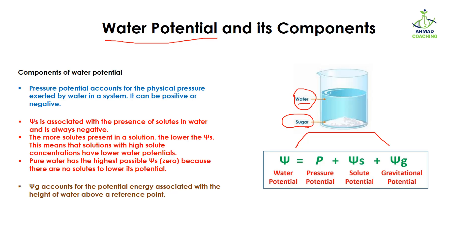First is water, which is associated with pressure potential, denoted by Ψp. Pressure potential accounts for the physical pressure exerted by the water in a system. For example, water in the beaker exerts pressure on the walls and at the bottom of the beaker. This pressure exerted by water is the pressure potential, and it can be positive or negative.